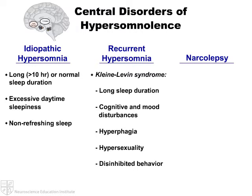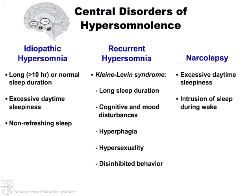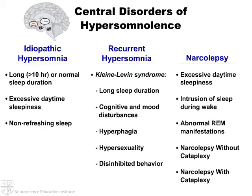Narcolepsy is characterized by excessive daytime sleepiness, intrusion of sleep during periods of wakefulness, and abnormal REM sleep, including periods of REM occurring at the onset of sleep. Cataplexy, the loss of muscle tone triggered by emotions, may also be present.